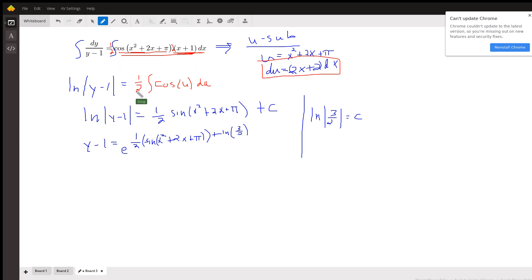And so after doing the u substitution, we get one-half, the antiderivative, the cosine of u, that's u, and du is all of this right here. And the antiderivative of cosine is sine. But now I'll replace u with x squared plus 2x plus pi. And there's our constant of integration.